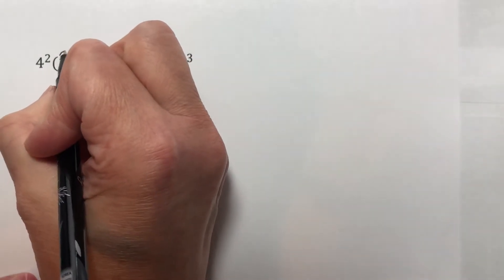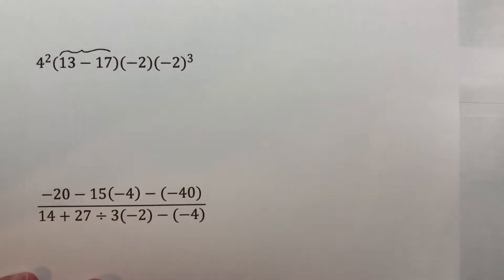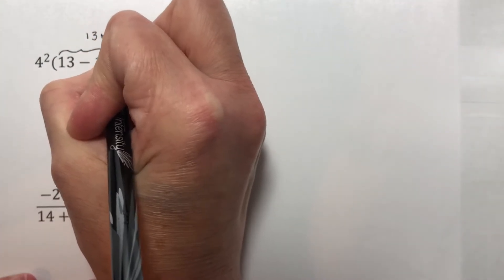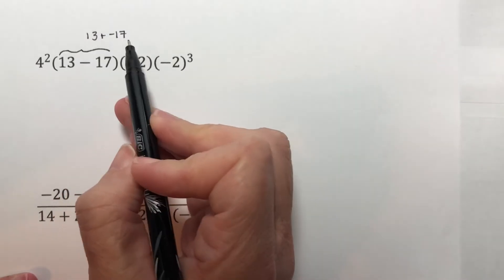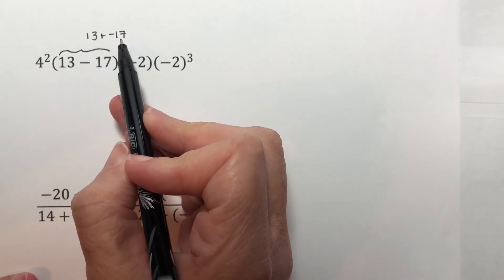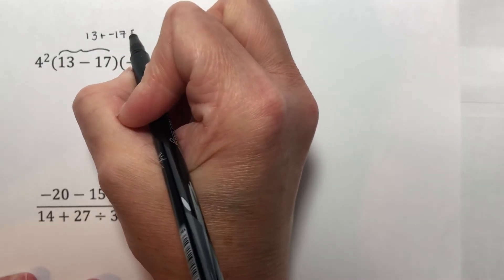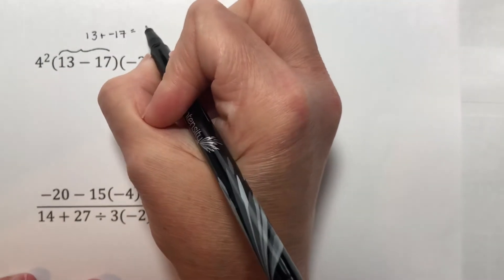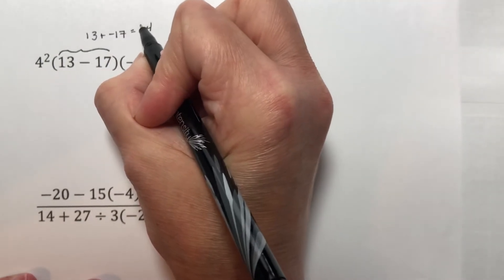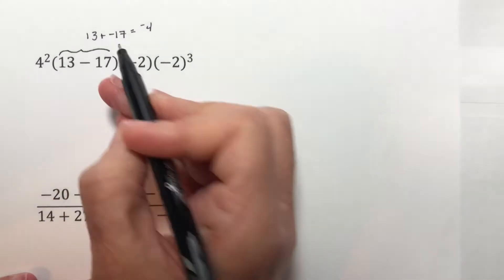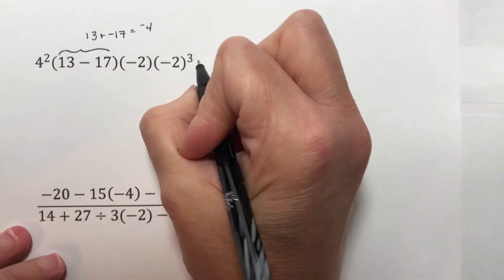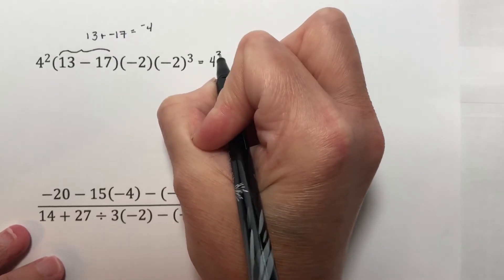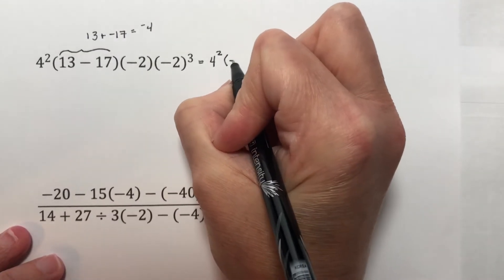But I can figure out 13 minus 17. This is 13 plus negative 17, so we subtract and keep the sign of the larger absolute value. That is going to be 17 minus 13 is 4, so it's going to be negative 4, because the 17 had the larger absolute value. So what I have here is 4 squared times negative 4.